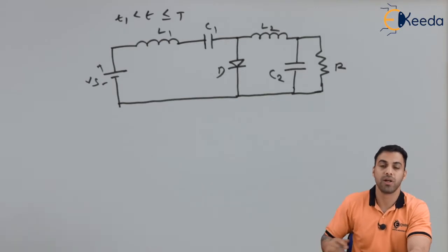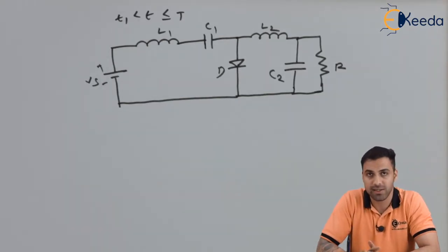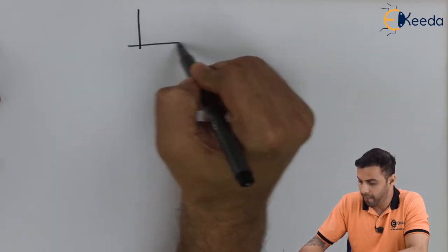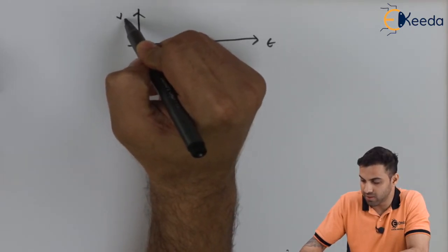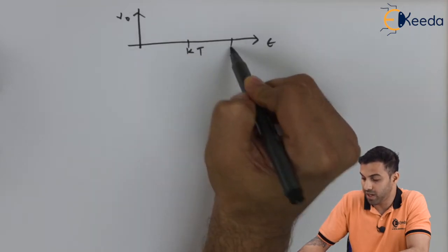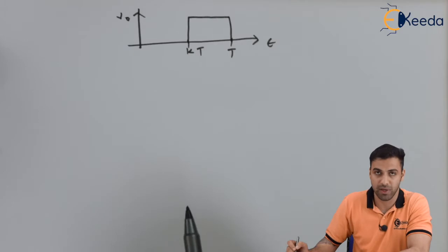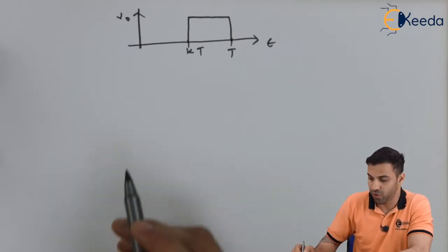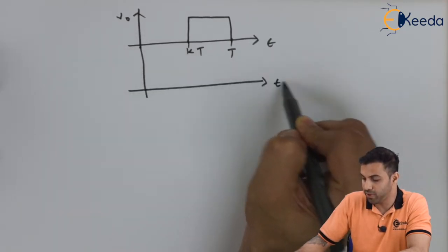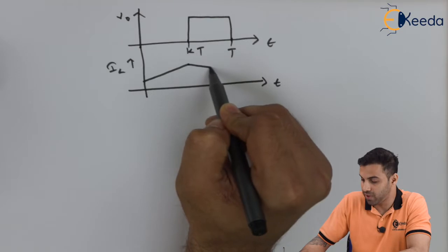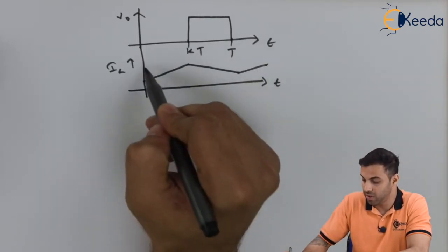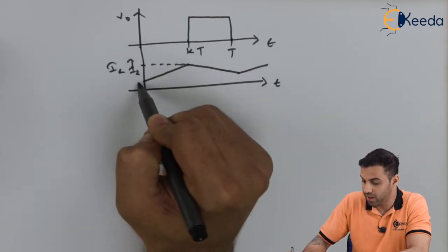Now let's discuss what happens during inductor charging and discharging. Drawing the output voltage across the resistive load versus time, we get a waveform where kT is the duty cycle representing the on-time interval. For the inductor current IL1 versus time, the current charges during on-time and discharges during off-time, with peak values I2 and I1.